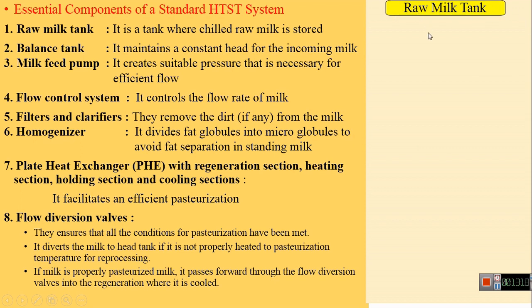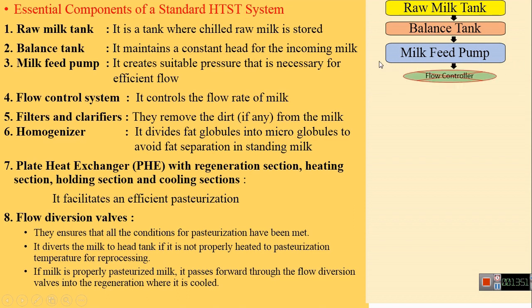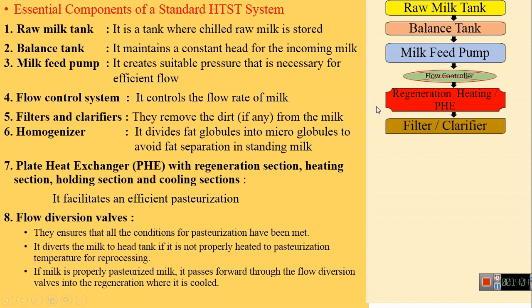You can see here the flow diagram of all essential components of the HTST system. Raw milk enters the raw milk tank, then passes to the balanced tank where a minimum amount of milk is always kept, maintaining constant head for incoming milk. From the balanced tank, the milk feed pump draws the milk and creates suitable pressure for efficient flow through the system. After the milk feed pump, there is a flow controller. The milk then enters the regeneration section with plate heat exchangers, where primary heating takes place.